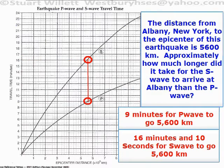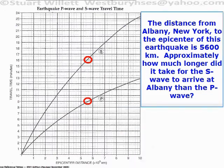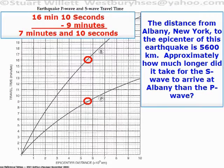So the question is approximately how much longer did it take the S wave? If you were in Albany and the P wave arrived, how much longer did you wait until the S wave arrived? So what's 16 minutes and 10 seconds minus 9 minutes? That's 7 minutes and 10 seconds. That's your answer.